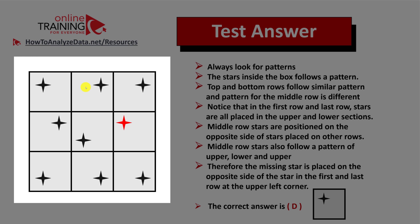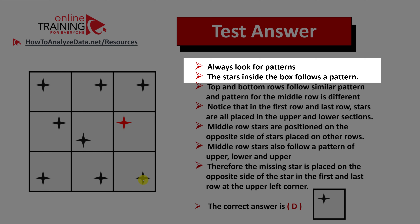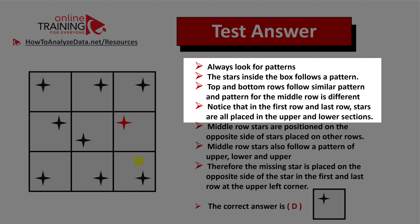The same thing happens in the middle column, and assuming that we've figured out the pattern, the same pattern will be applicable in the right column as well. This is why the missing star is placed on the opposite side of the stars in the top and bottom rows. Let's recap: always look for patterns. The stars inside the box follow the pattern — top and bottom rows follow similar patterns, and the pattern in the middle row is very different. The first row and last row stars are placed in the upper and left sections.